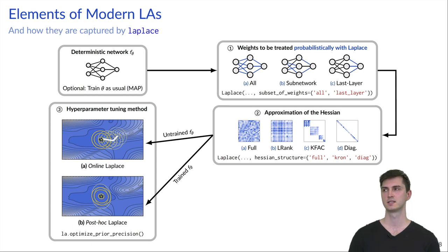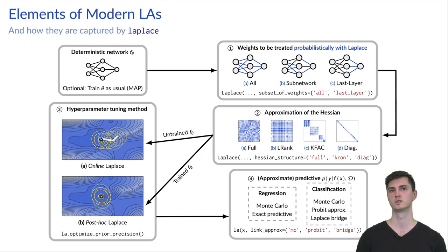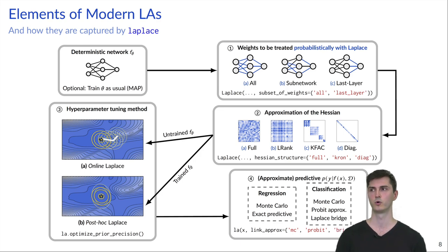In the next step, there are two possibilities. The first is that you don't have a pre-trained network. Then you can optimize the hyperparameters during training by optimizing the marginal likelihood. If you've already trained a neural network, you can simply use that and optimize the hyperparameters post hoc via the marginal likelihood or simply using cross-validation. Finally, we just want to choose a predictive approximation since, at least for the classification case, no exact closed-form solution is available. There we can use a Monte Carlo approximation or closed-form approximation such as the probit approximation.